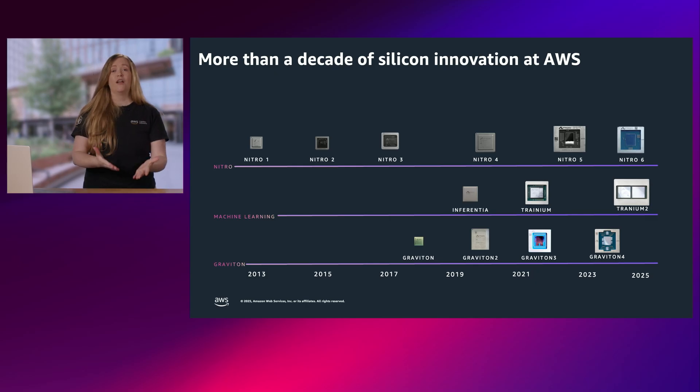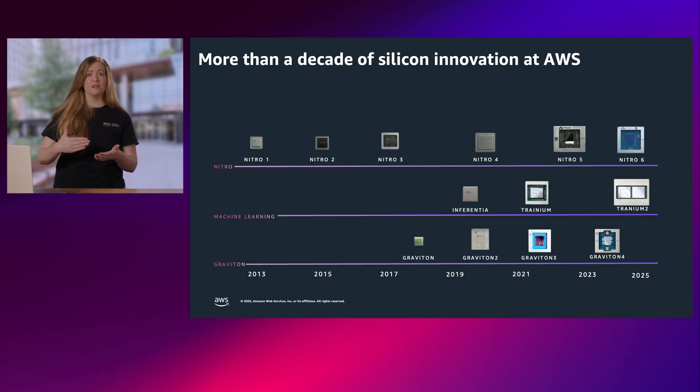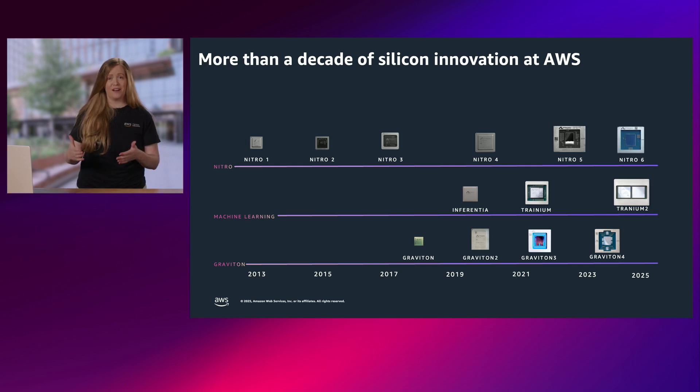After realizing the benefits to customers, we doubled down and explored CPU processing. The Graviton line of CPU processors are custom chips developed by Annapurna Labs for CPU-based applications. Today, the majority of new compute that comes onto AWS is powered by Graviton for CPU processing.